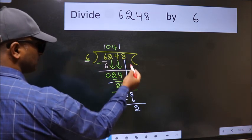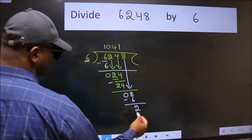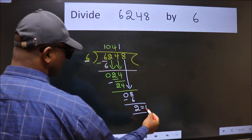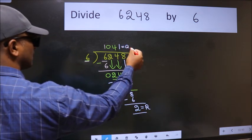No more numbers to bring down. So, we stop here. This is our remainder and this is our quotient.